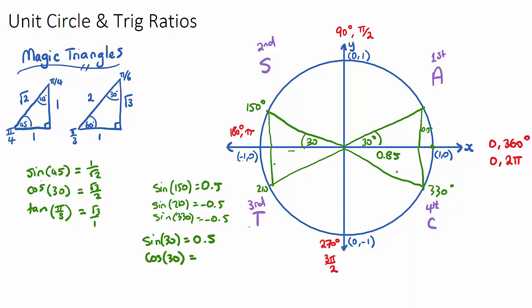In the fourth quadrant, only cos is positive because it's going down. The height is negative, so sine will be negative and tan will be negative. Only cos, the width, will be positive.